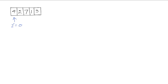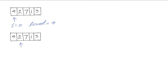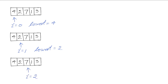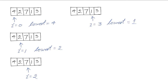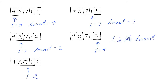The pointer will point to the first element. The lowest number we have seen so far is 4. We will now move the index to the second element and compare 2 with the lowest we have seen, which is 4. 2 is lower so it becomes the lowest. We then move the index to the third element and compare 7 with 2 — 2 remains the lowest. We then move to the next element and check if 1 is less than the existing lowest, so lowest now becomes 1. We move to the last element and compare 3 with 1 — 1 is still the lowest.